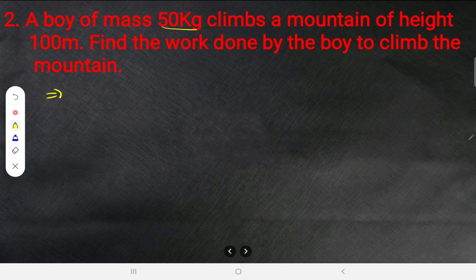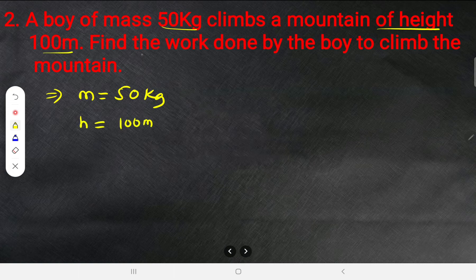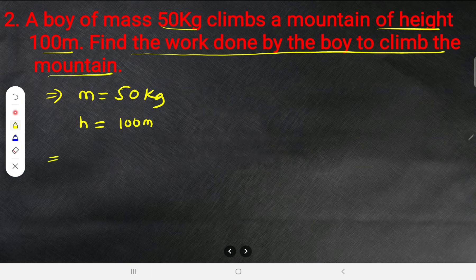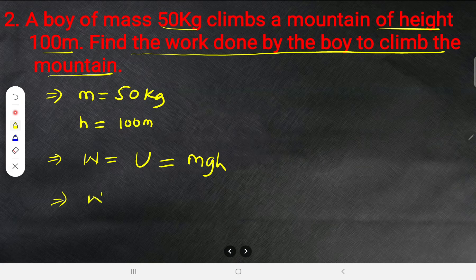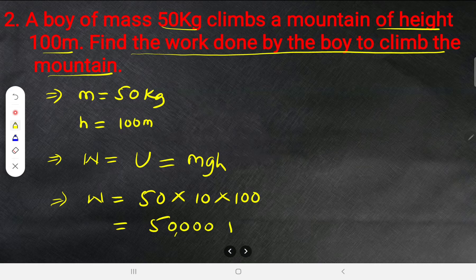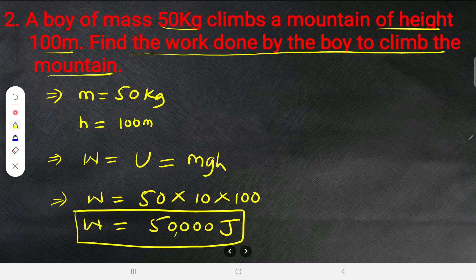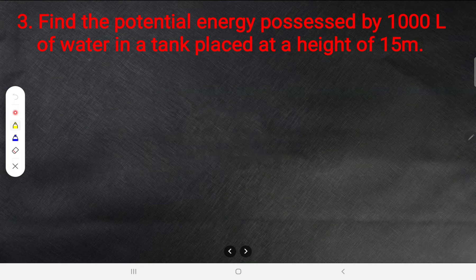Numerical 2: A boy of mass 50 kg climbs a mountain of height 100 m. Find the work done. Work done = mgh = 50 × 10 × 100 = 50,000 J. He must have done 50,000 joules of work, and he possesses that much energy at the top.